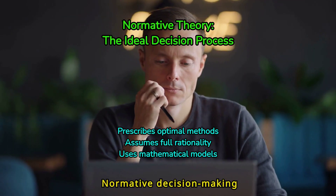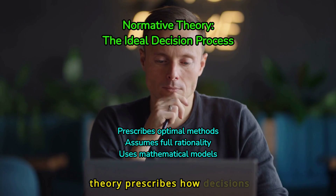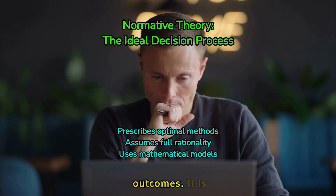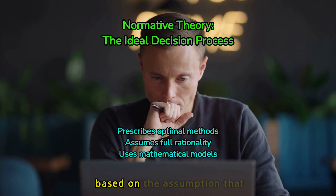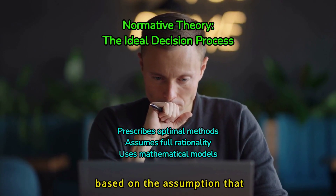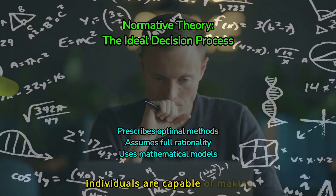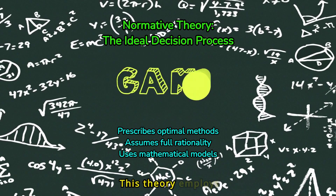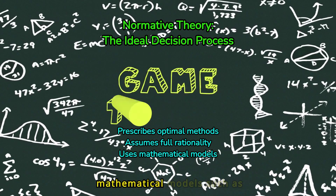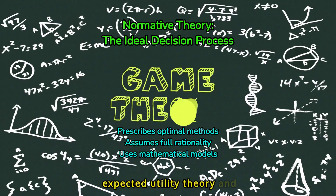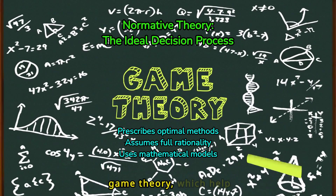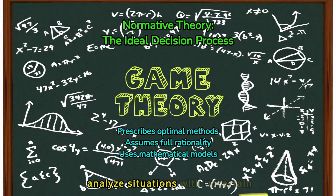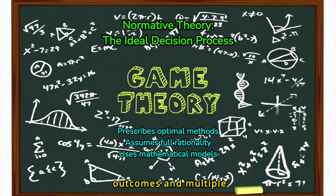Normative decision-making theory prescribes how decisions should be made to achieve optimal outcomes. It is based on the assumption that individuals are capable of making fully rational choices. This theory employs mathematical models such as expected utility theory and game theory, which help analyze situations with uncertain outcomes and multiple options.